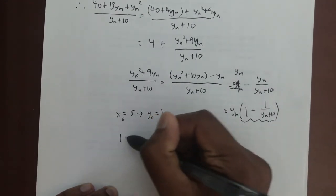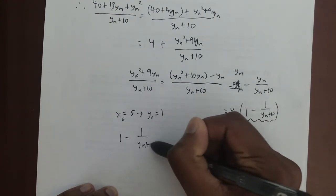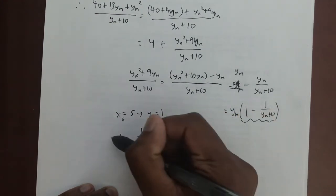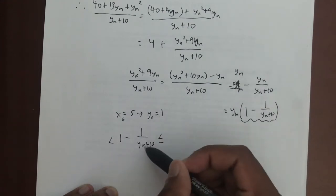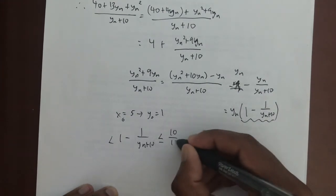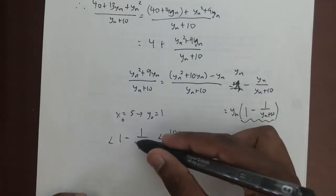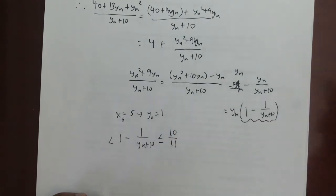At this point we see through pattern recognition that every term gets smaller and smaller, which means we can bound this initial value. Because if x_0 = 5, then that means y_0 = 1. So this is the largest it's ever going to be. Let's bound this part: 1 - 1/(y_n + 10). Because if it's equal to 1, the largest it's ever going to be is 10/11.